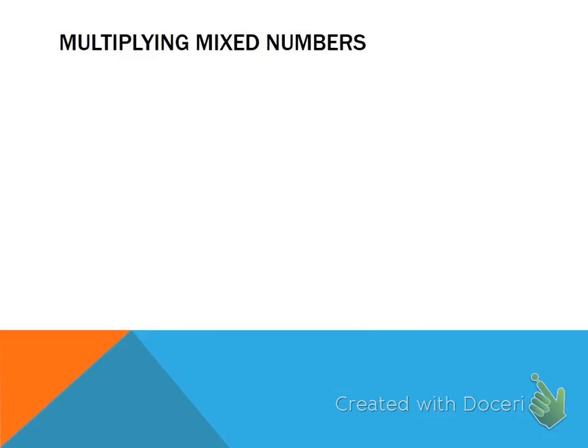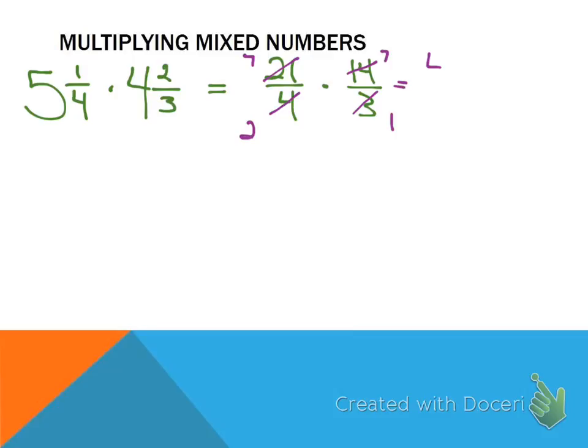Now in example 3, now we're multiplying mixed numbers. We have 5 and 1 fourth times 4 and 2 thirds. The first thing we want to do is change these mixed numbers to improper fractions. So what would 5 and 1 fourths be as an improper fraction? 21 over 4. 5 times 4 is 20 plus 1 is 21. 21 over 4 times what? 14 over 3. Now, can I cross reduce? So first step is change the improper fraction. Second step is to cross reduce. Yes, I can. 3 and 21, I can reduce by 3 to make 1 and 7. 4 and 14, what can I reduce by? 2 to make 2 and 7. Now, I multiply straight across. 49 over 2.